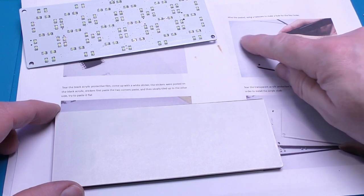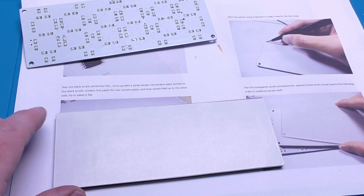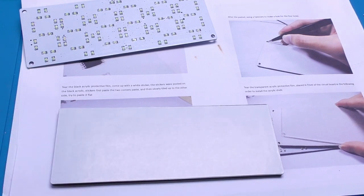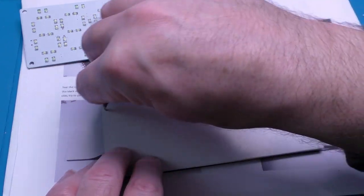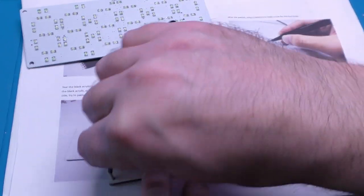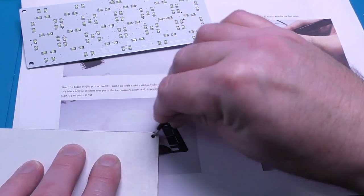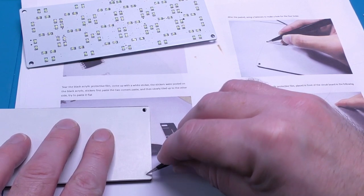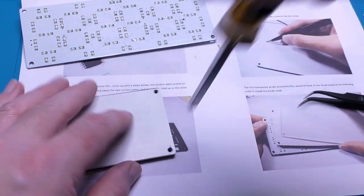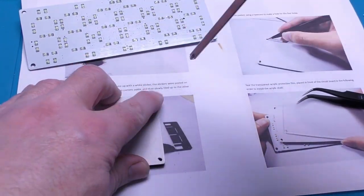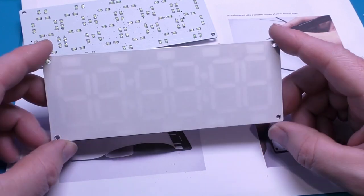So now it says after the pasted, using tweezers to make a hole. So basically we need to poke a hole in the four screw hole positions. You can see the outline of the digits then.